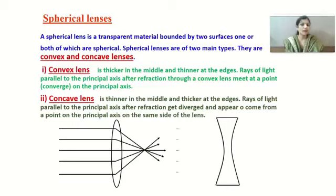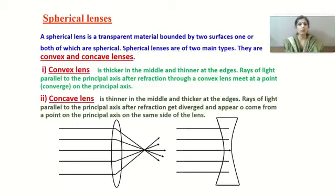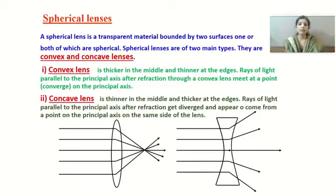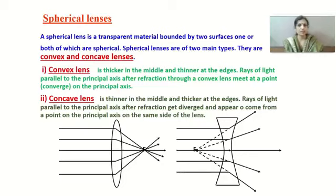A concave lens is thinner at the middle and thicker at the edges. When rays of light fall parallel to each other on a concave lens, after refraction all these rays diverge, but it appears as if they are emerging from one point on the principal axis, and this point is called the focus of the concave lens.